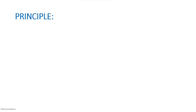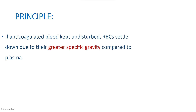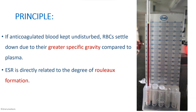Now we will see the principle of ESR. If anticoagulated blood is kept undisturbed, the RBCs will settle down due to a greater specific gravity compared to the plasma. Blood contains both plasma as well as the formed elements, and these RBCs are heavier — they have a greater specific gravity compared to the plasma — so they will tend to settle down.